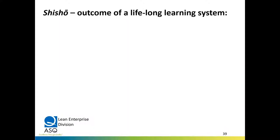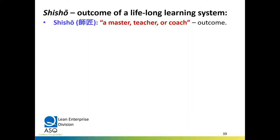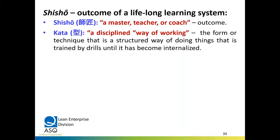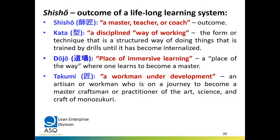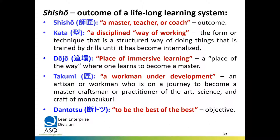Shiso is the outcome of a lifelong learning system — a person who becomes a teacher, master, or coach. Kata is the disciplined way of working applied in the process. Dojo is the place of immersive learning where one learns to become the master. Takumi is a workman who starts with just the basics and becomes a practitioner of the art, science, and craft of Monozukuri — the art of making things. When we get to the top, we've achieved Dantotsu — the objective of being the best of the best. In this Japanese system, the Gemba is the Dojo — it's where the work is being done.